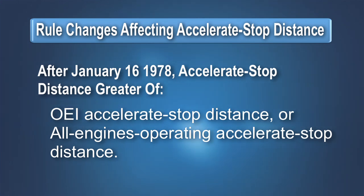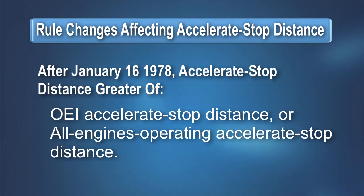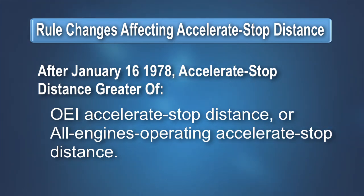Accelerate stop distance was revised to be the longer of the distance with one engine failing just prior to V1, or with all engines operating throughout the rejected takeoff. However, accelerate stop distance was still determined only for a dry runway.